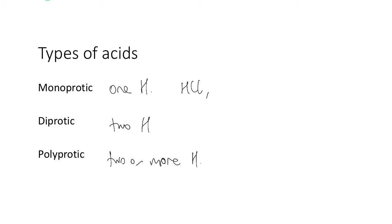So monoprotic: HCl, HNO3, CH3COOH. Remember, this is the only H that comes off. Diprotics: H2SO4 or carbonic acid H2CO3, and two or more. So H3PO4 is a possible polyprotic acid. So just remembering those words and understanding what those mean, especially your diprotic acids and your polyprotic acids.